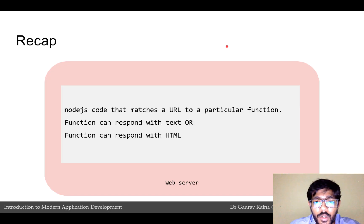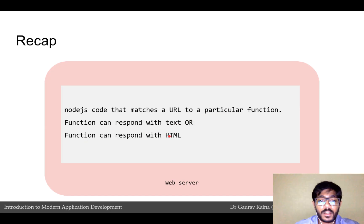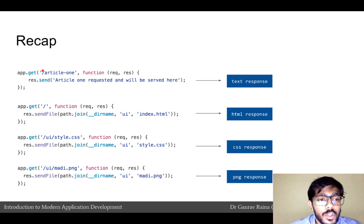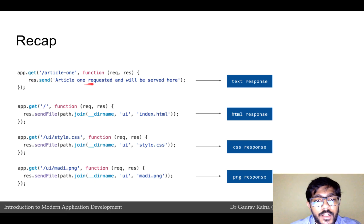When we were looking at the web server that we wrote, we wrote a web server in Node.js where the code was matching a URL to a particular function. The function can respond with text or respond with HTML. For example, this is what the code looks like: the first piece of code says that if there is a GET request made to the URL slash article1, use this function to determine the response. This function responds with the text: 'article 1 requested and will be served here.' This is a text response.